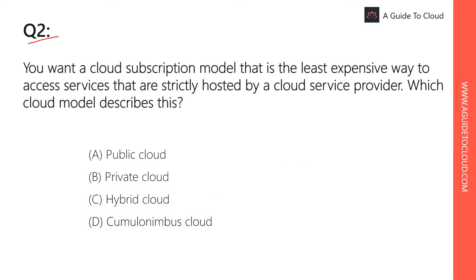Question two: You want a cloud subscription model that is the least expensive way to access services strictly hosted by a cloud service provider. Which cloud model describes this? The answer is public cloud, which offers a cloud-hosted model strictly managed by a cloud service provider. Private cloud is managed by you or a third party. Hybrid cloud requires maintaining some on-premise infrastructure as well. So the right answer is public cloud.